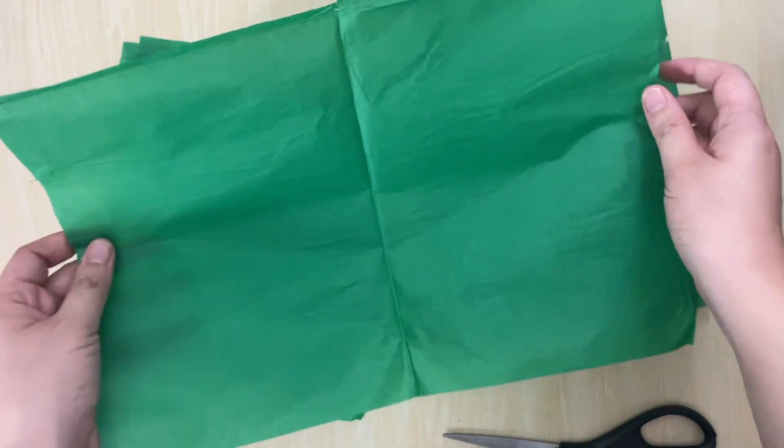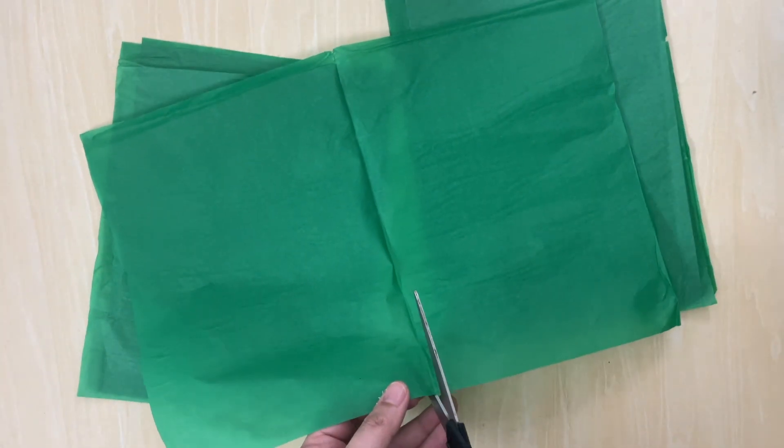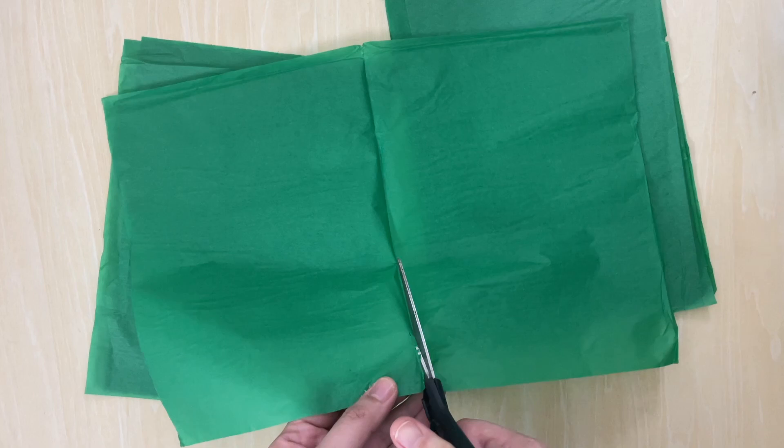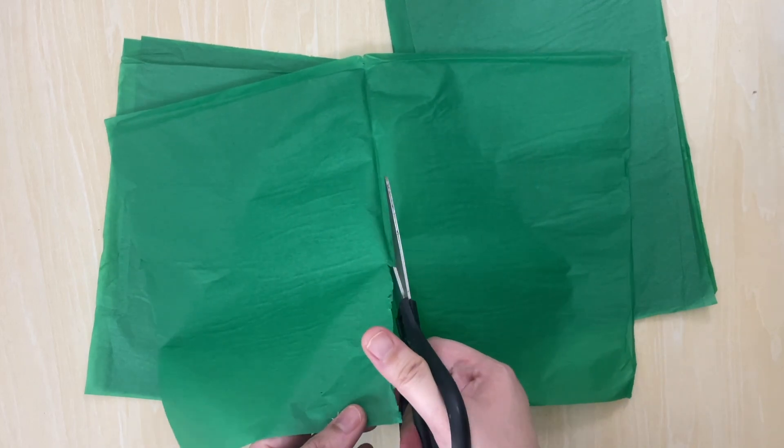As you can see, we bought Japanese paper that is pre-folded. We're gonna use those as guides on where you should cut.